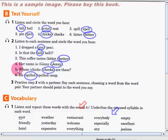Her name is Jenny. Whose checks are these? He spilled soup.